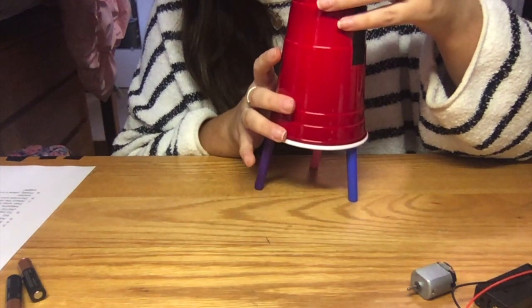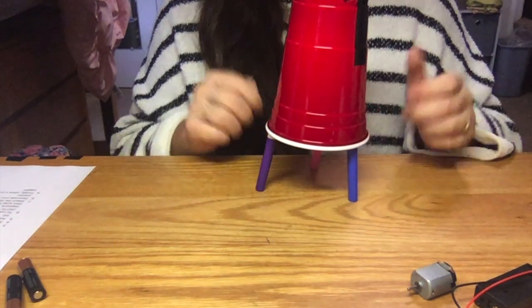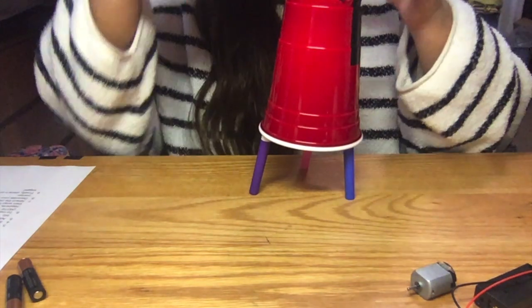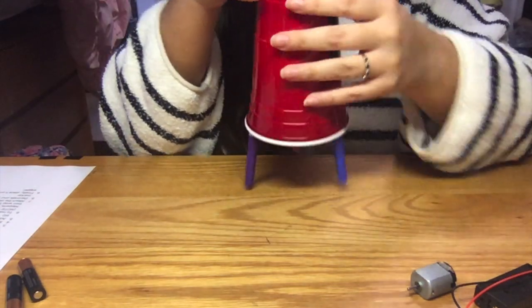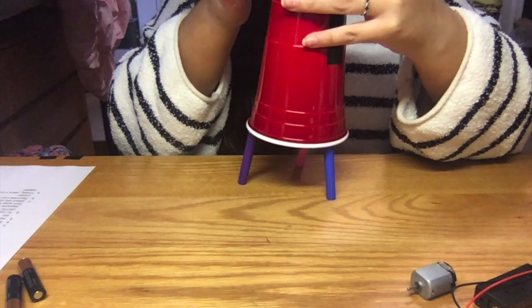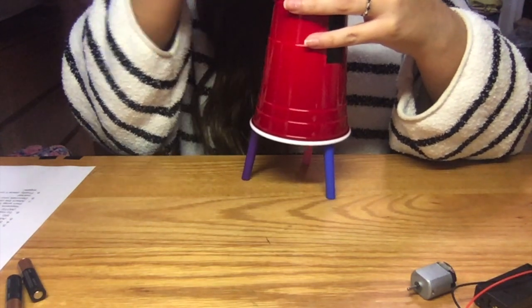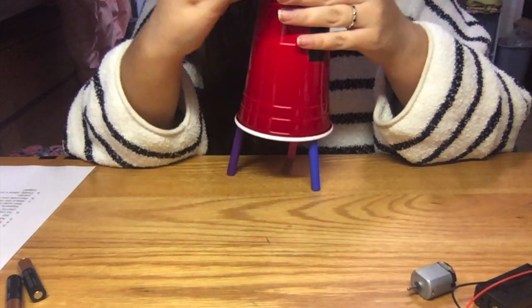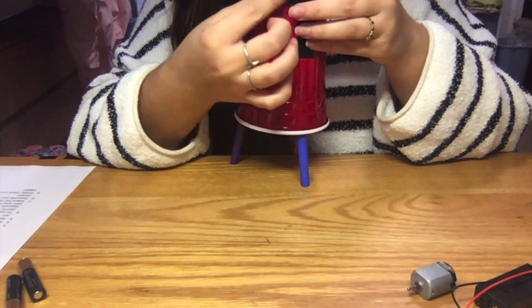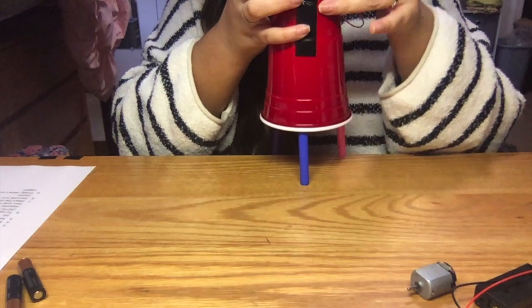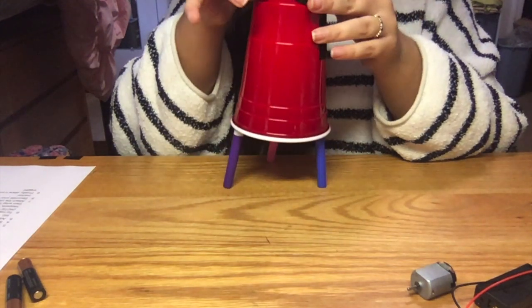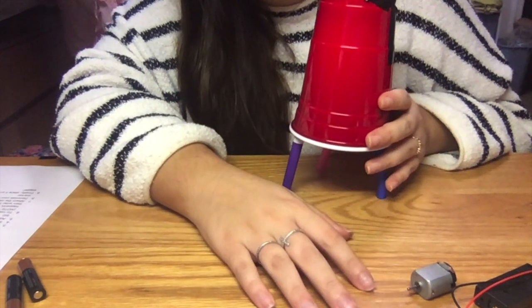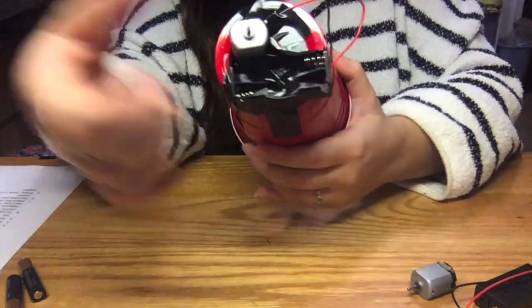After you're done securing the battery pack to the top, you're going to want to then secure the motor also on top right next to the battery pack. You're going to do that again using electrical tape, so it should look something like this. You're going to want to make sure it's nice and secure, and at the end it should look something like that.